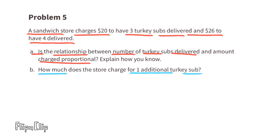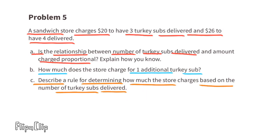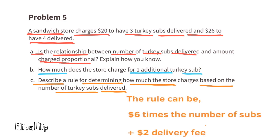Part b: how much does the store charge for one additional turkey sub? Three turkey subs cost $20, four turkey subs cost $26. The difference between $26 and $20 is $6, so one additional sub costs $6 more. Part c: describe a rule for determining how much the store charges. The rule is: six dollars times the number of subs, plus a two-dollar delivery fee.